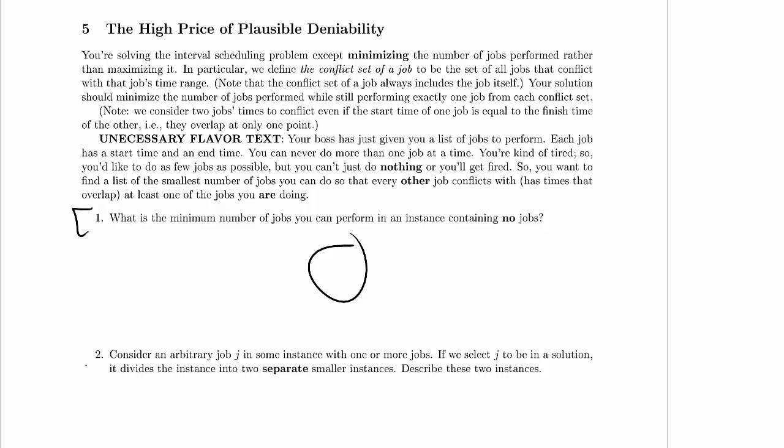We are on problem 5.2 right here. Consider an arbitrary job J in some instance with one or more jobs. If we select J to be in a solution, it divides the instance into two separate smaller instances. Describe these two instances.